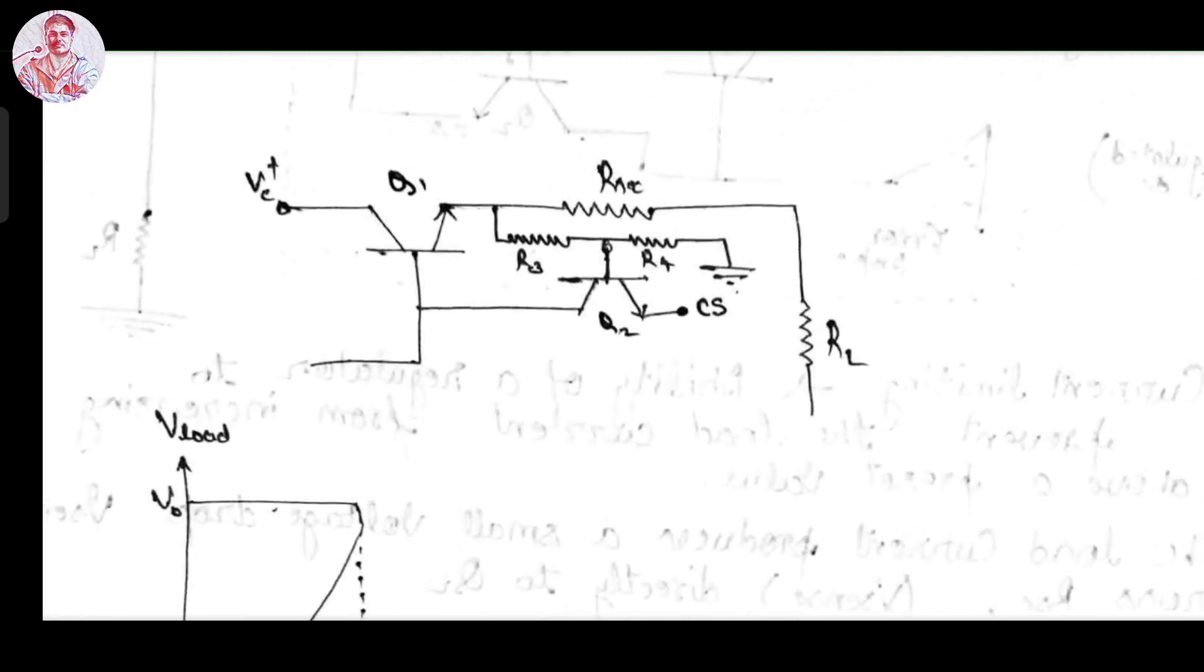We add the R3 and R4 resistor divider circuit between the Q1 series pass transistor and current sensing terminal.